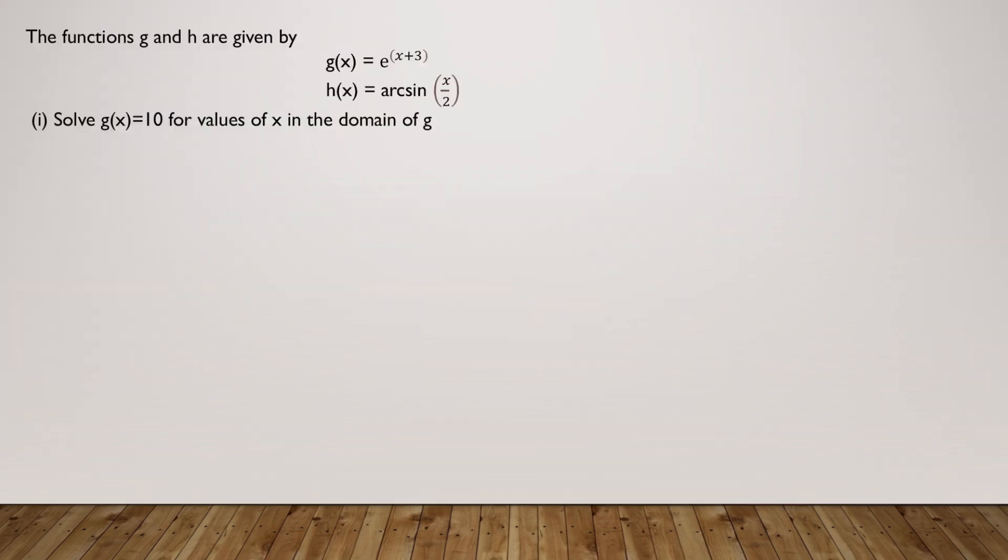So in the first part of FRQ4 you will generally be given two equations and then you will be asked to find the variable or x value for a particular output. Over here we have g(x) equals e to the power x plus 3, and h(x) equals arc sine of x by 2. The first part is solve g(x) equals 10 for values of x in the domain of g.